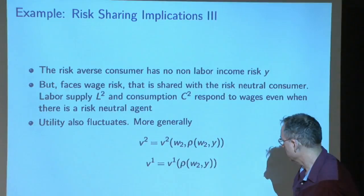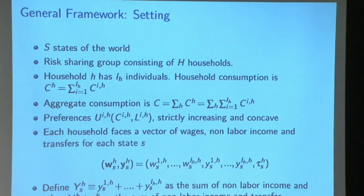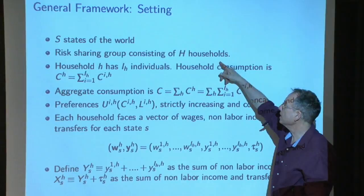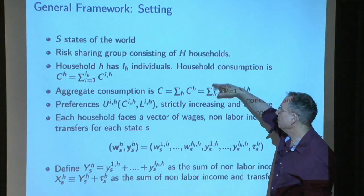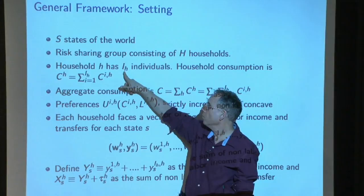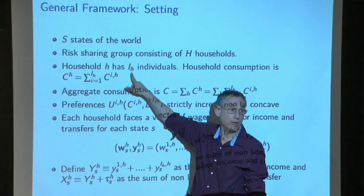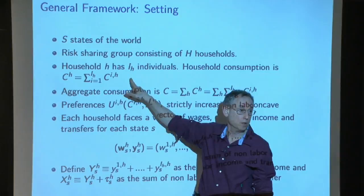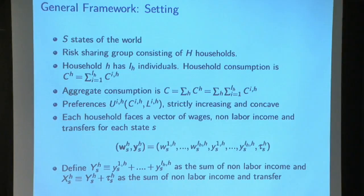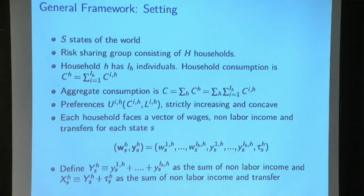That's the summary; now we'll generalize. The general case has F states of the world and a risk-sharing group of households — say a village or township. Every household H has individual members, possibly two or three. This is meant to be realistic. We actually go to the data with these specifications, with hours and labor force participation for every member of the household. We normally only have consumption at the household level, but here we have labor at the individual level.